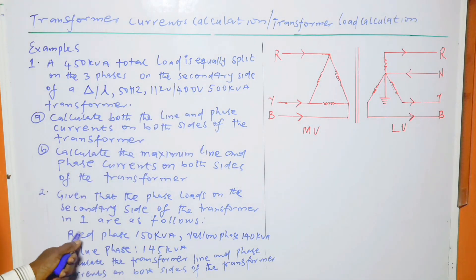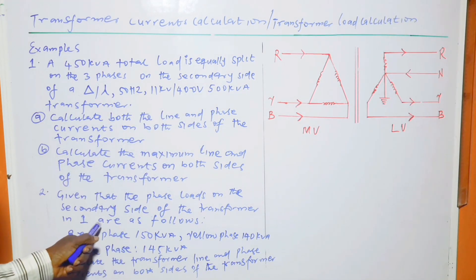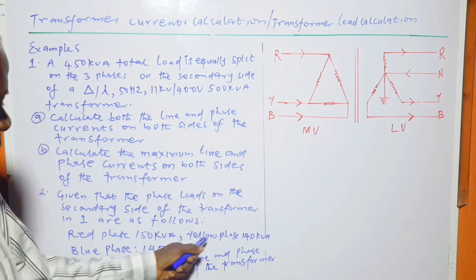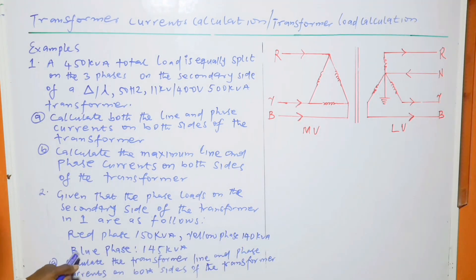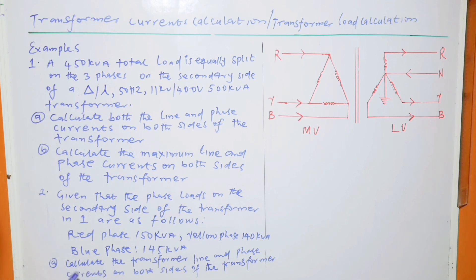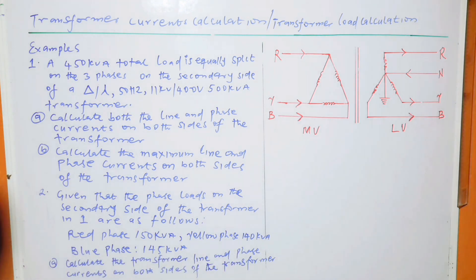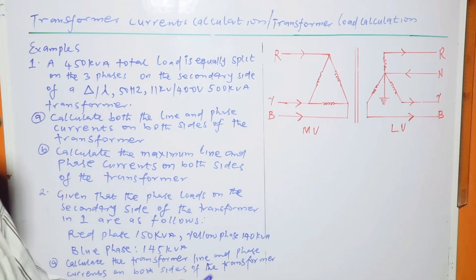The second question: given that the phase loads on the secondary side of the transformer in question one are as follows — red phase 150 kVA, yellow phase 140 kVA, blue phase 145 kVA — part (a) calculates the transformer line and phase current on both sides of the transformer.